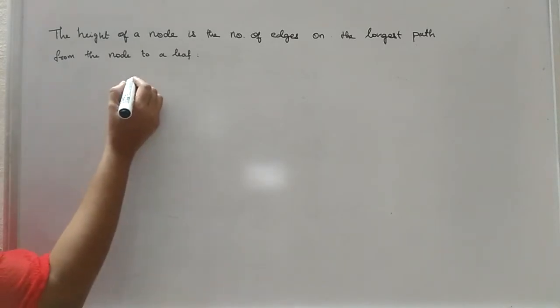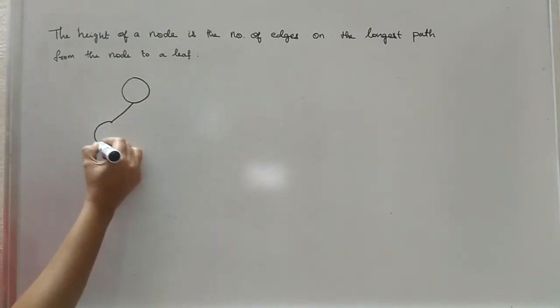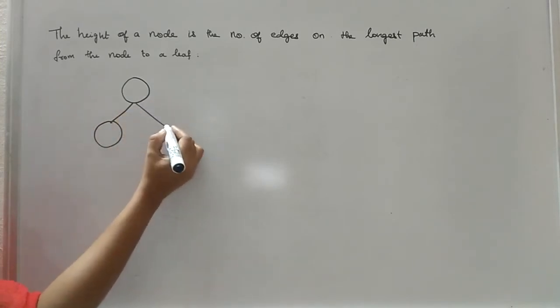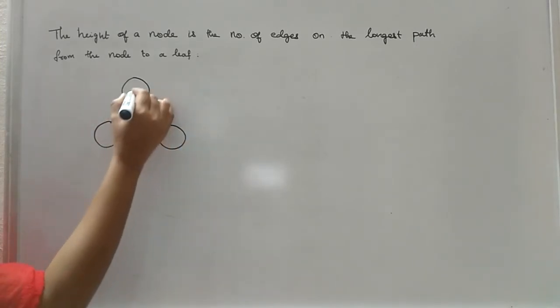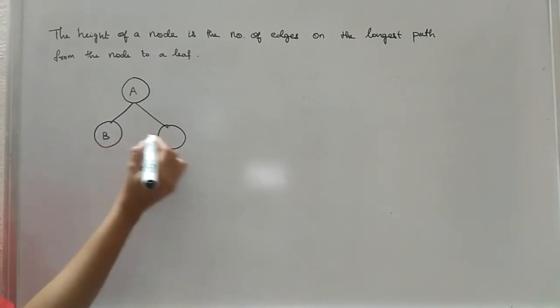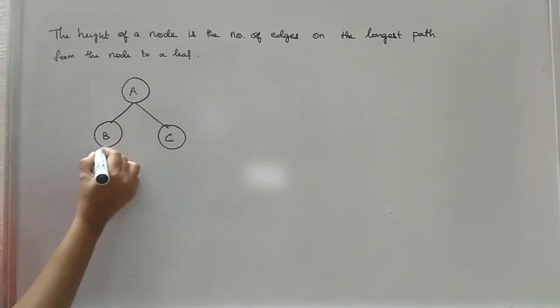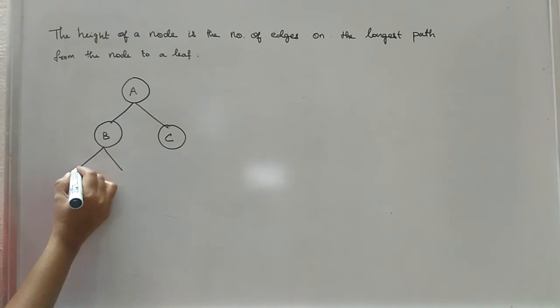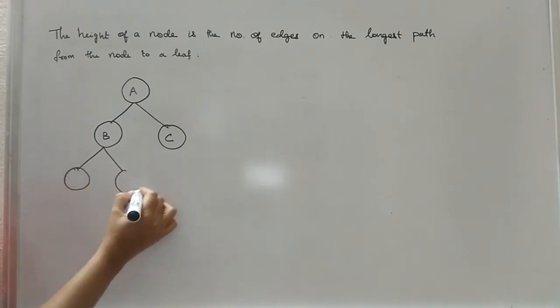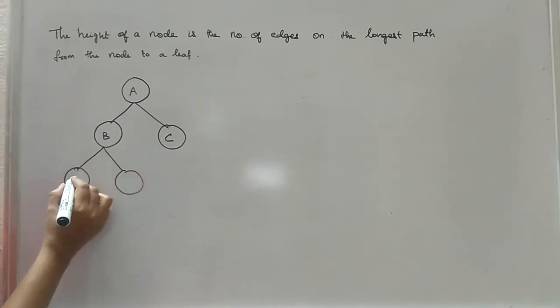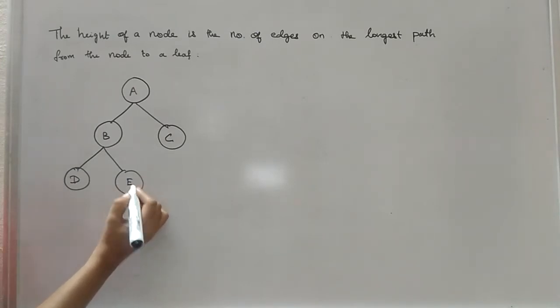Okay, so let's see an example. I am going to draw one binary tree. Okay, so here I am writing A, B, C. So here D and E.